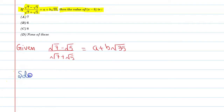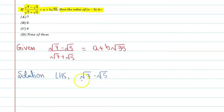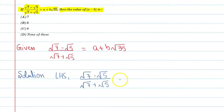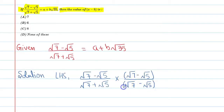Now take the left hand side first and rationalize the denominator of the left hand side term. The left hand side is (√7 - √5) / (√7 + √5). We can see that √7 - √5 appears in the numerator, and here also we multiply by √7 - √5, making the numerator (√7 - √5) whole squared.